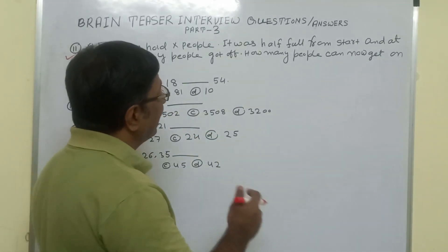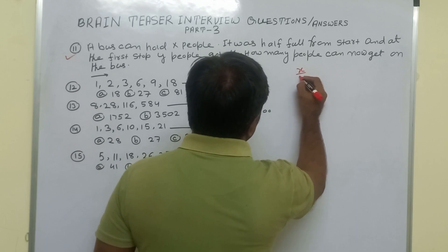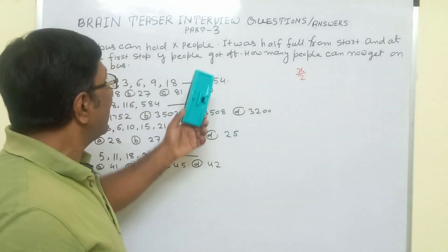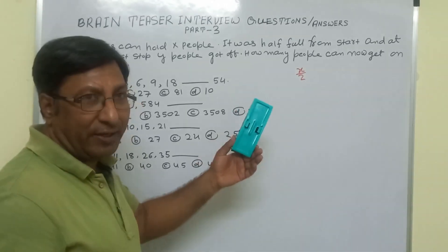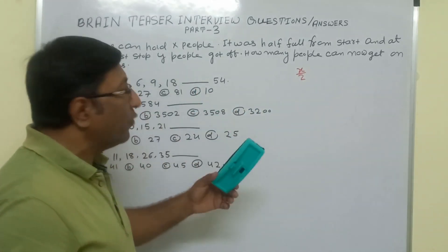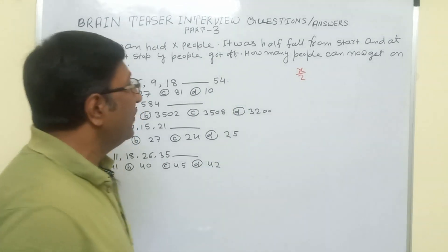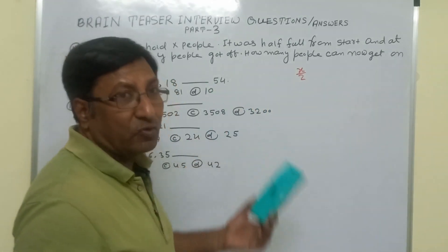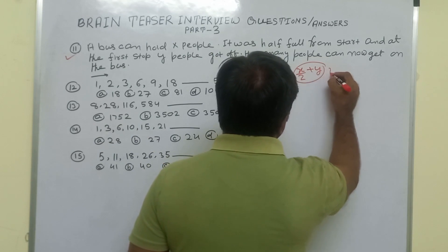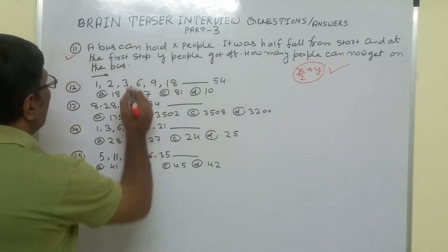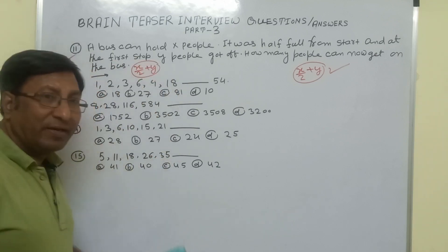There are x total seats, but the bus was half full when it started, so the initial vacant seats are x/2. Because it was half full from the start, that means half the seats were vacant. Now at the first stop, y people got off, so y more seats become vacant. Total people who can now get on is x/2 plus y. So the correct answer is x/2 + y people can now get on the bus.